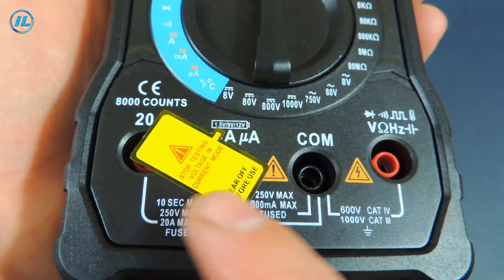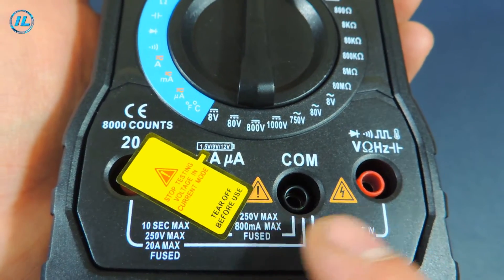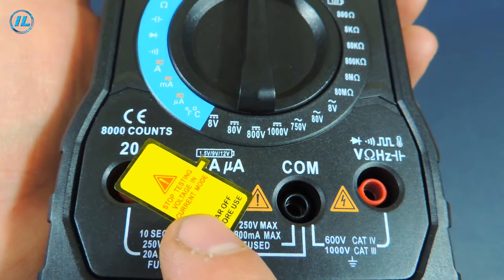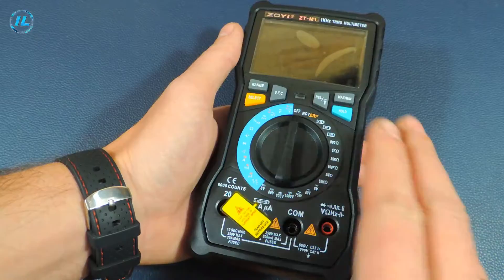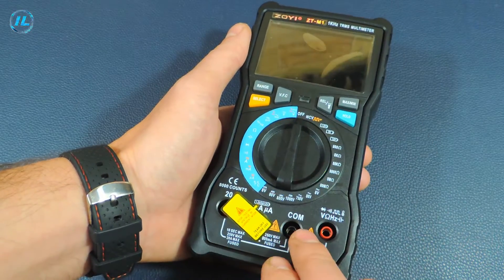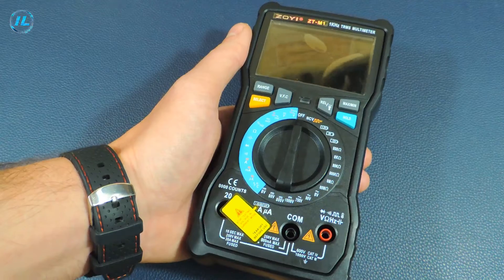There are 4 probe connectors at the bottom: common, main, and 2 connectors for measuring currents. Now I will install the batteries, connect the probes and check the capabilities of this multimeter.